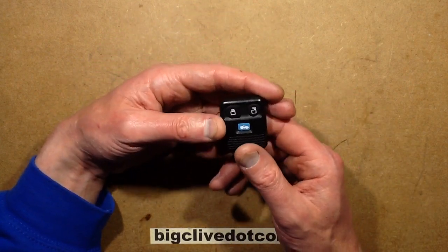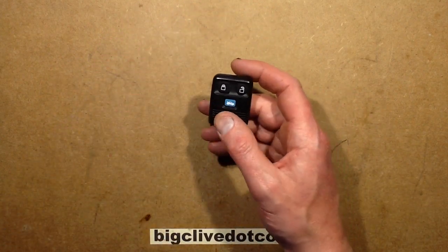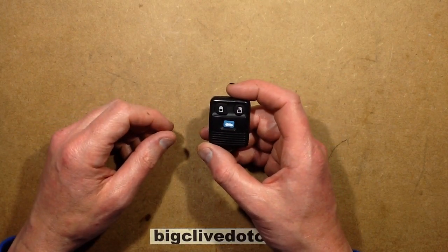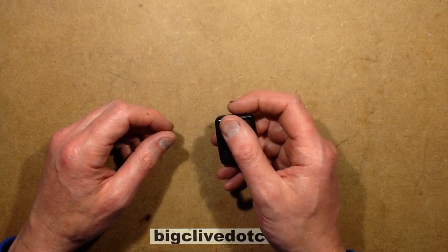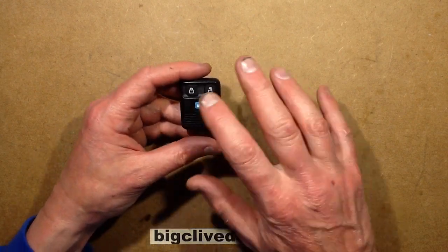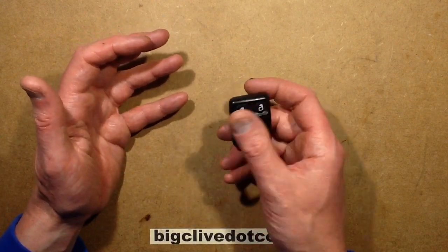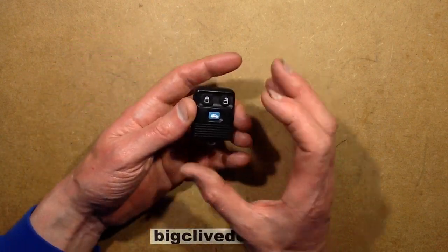And if you look in the manual for the van it says that if you want to add another key fob you need, what was it, you needed three key fobs to program any further ones in. It was almost like it was designed that if you lost a key fob then you couldn't program new ones and you had to go to the dealer. But there's a way around that.